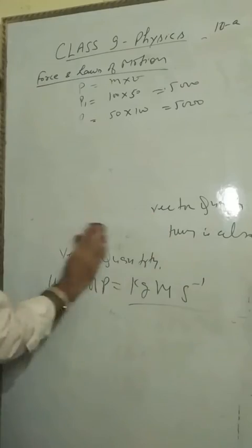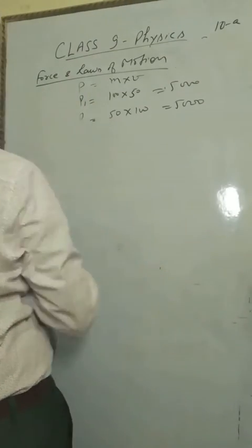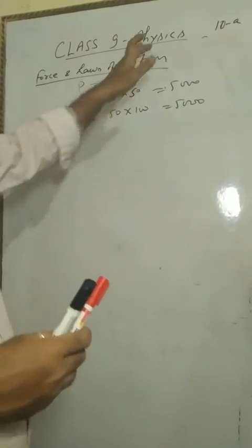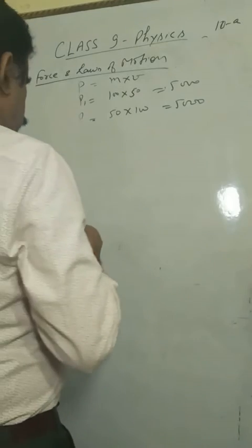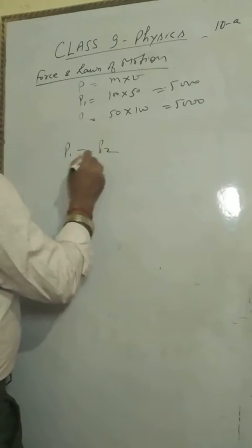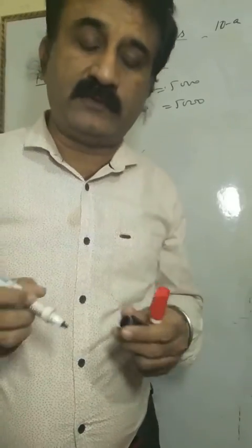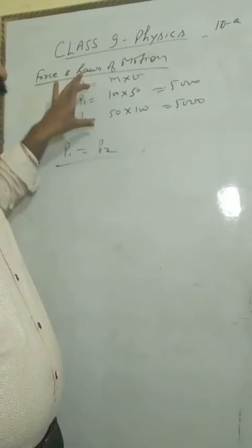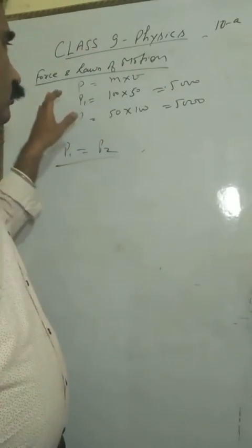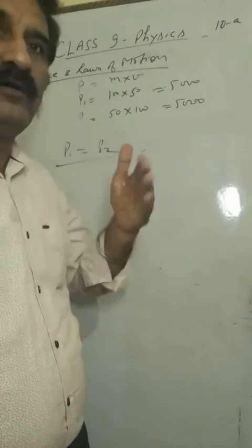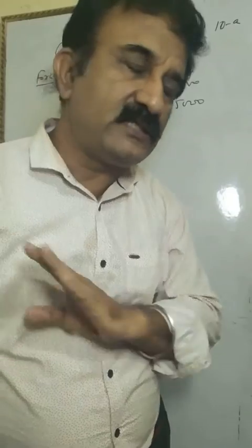Momentum find, masses differ, velocity differ, but this product is same. Then P1 is equal to P2. Remember, if there is any object like this, this M into V product shows the same, then the momentum is same, and the final impact is the same.